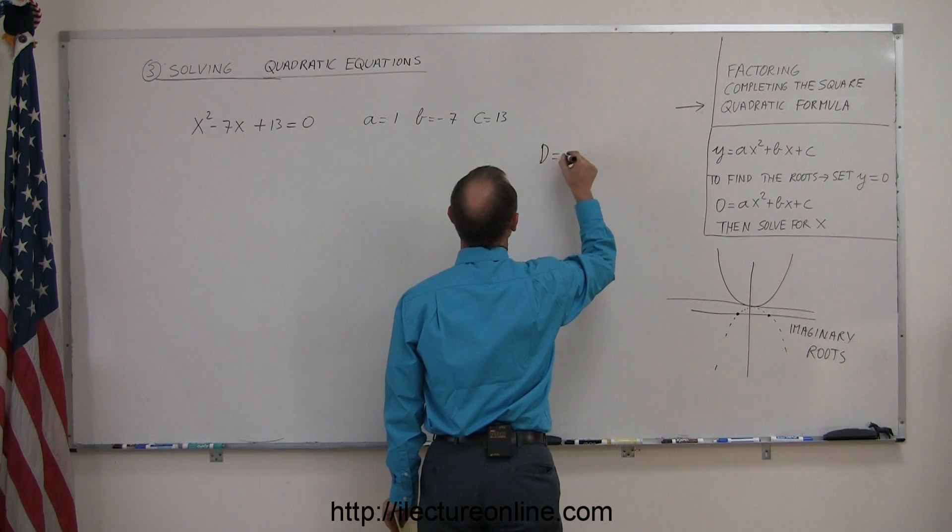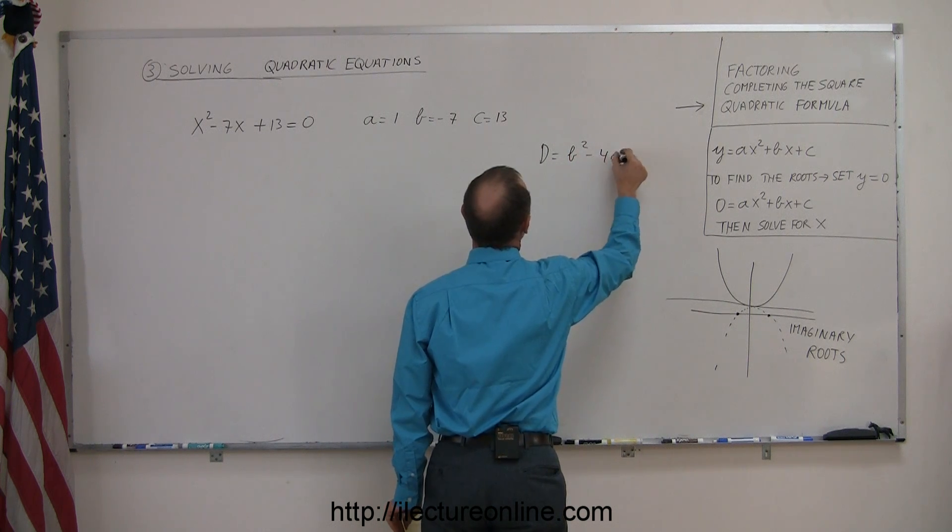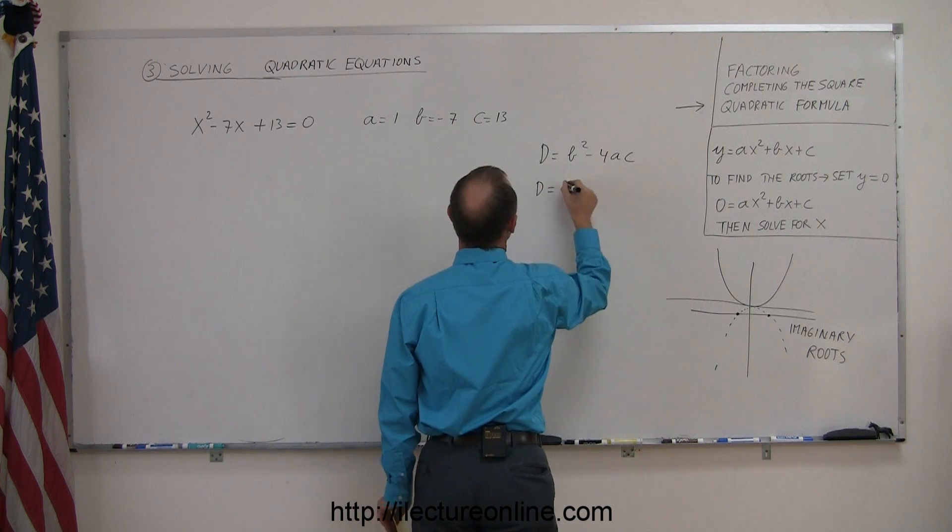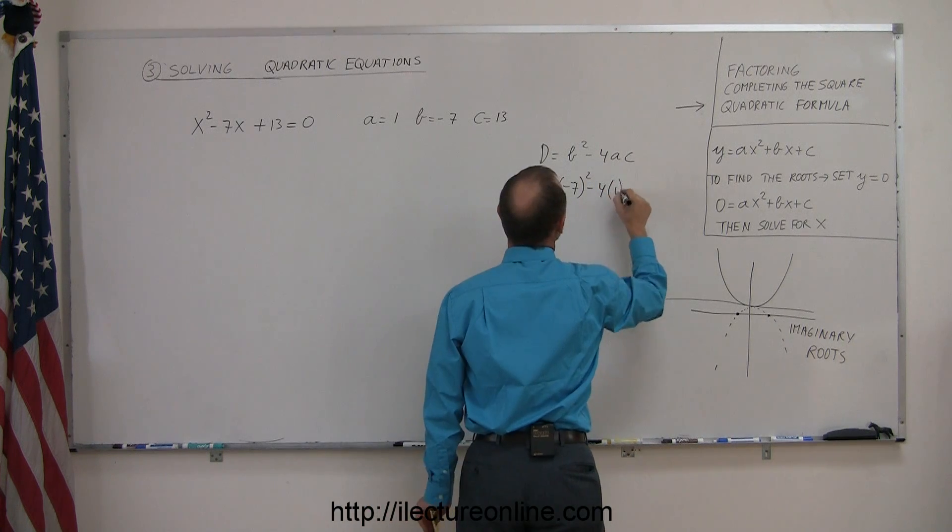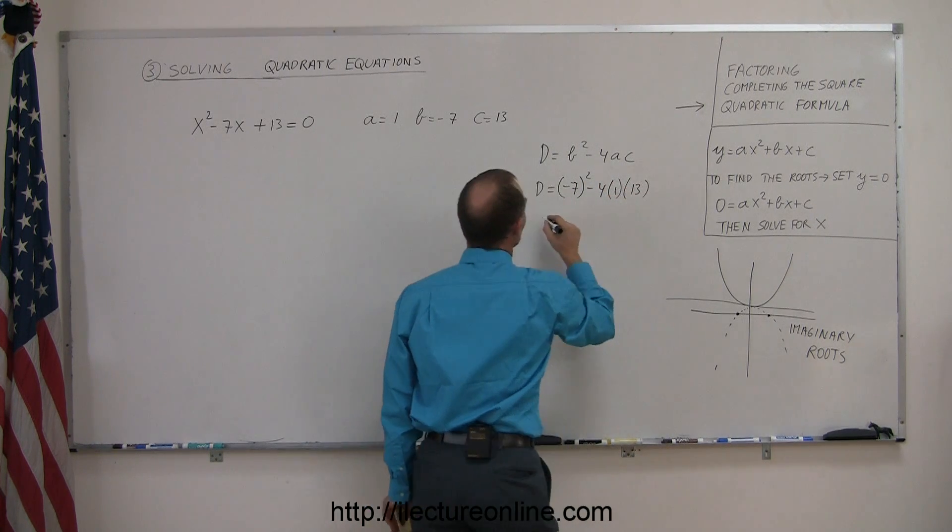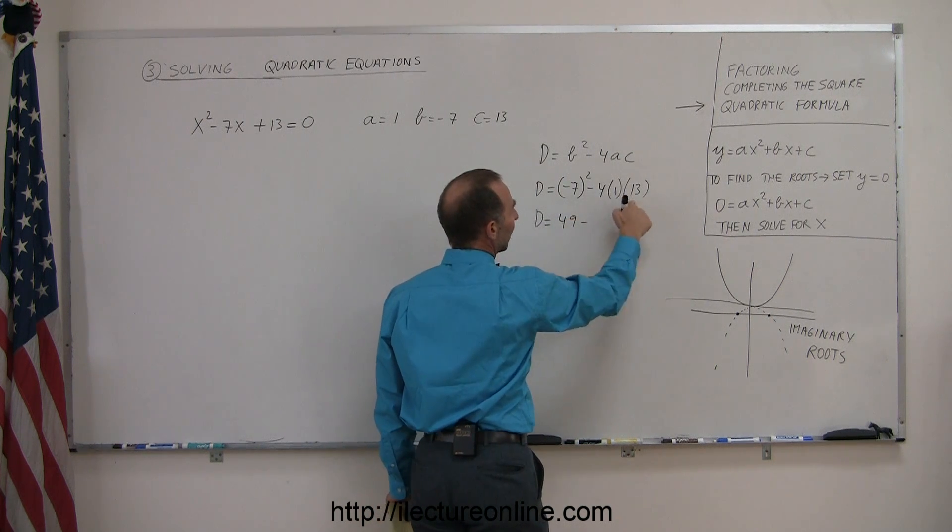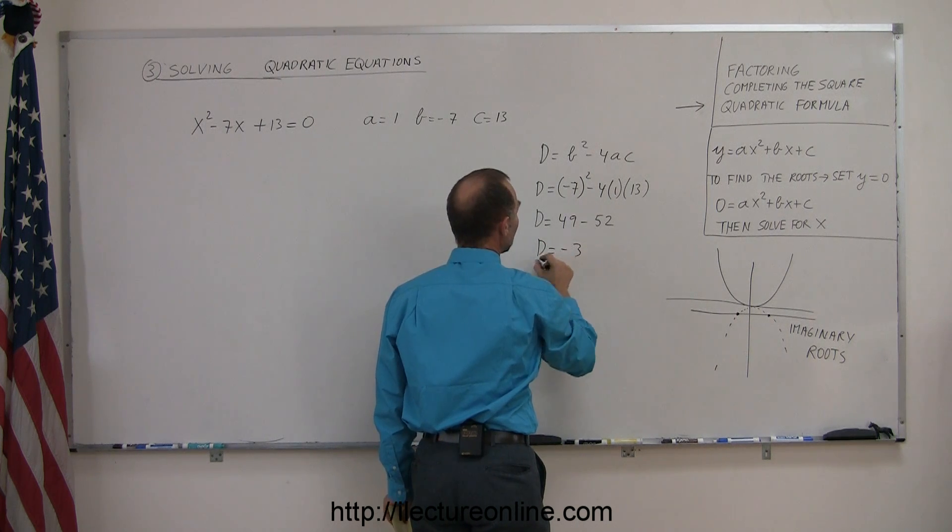The determinant is equal to b squared minus 4ac. So in this case, the determinant is equal to negative 7 squared minus 4 times a, which is 1, times c, which is 13. So d is equal to 49 minus 4 times 13 is 52. And so d equals minus 3.